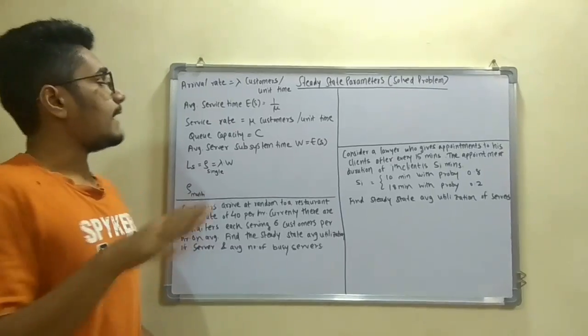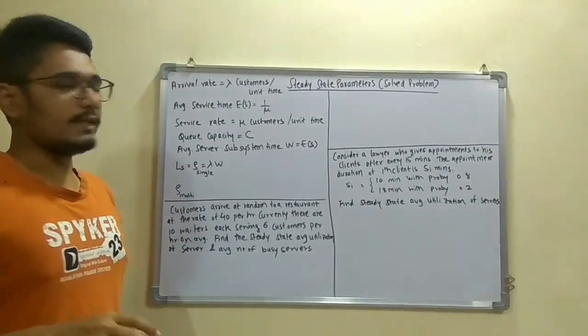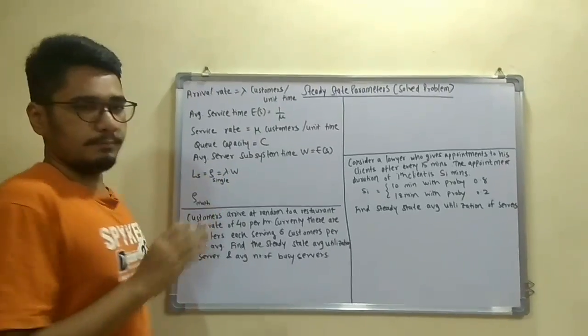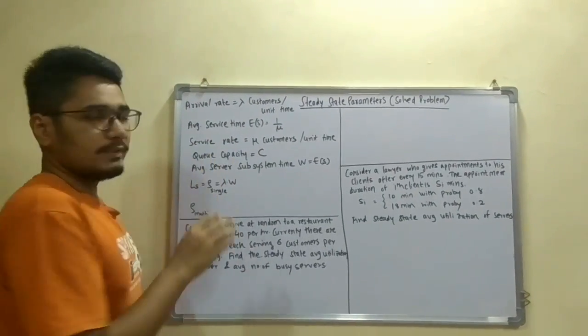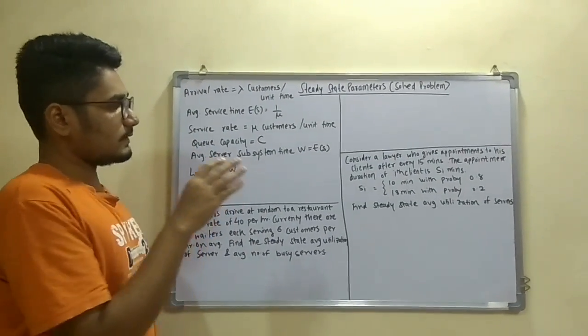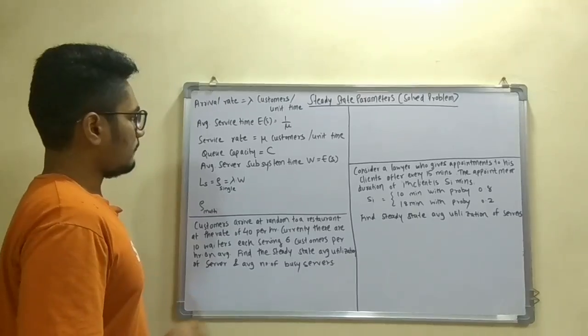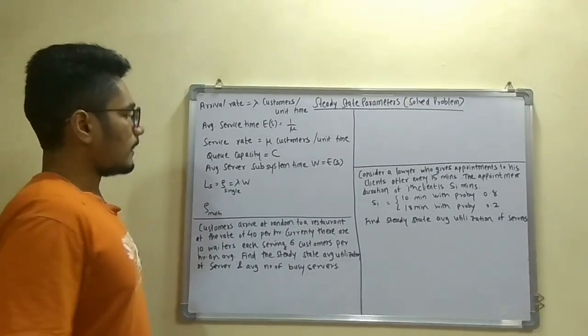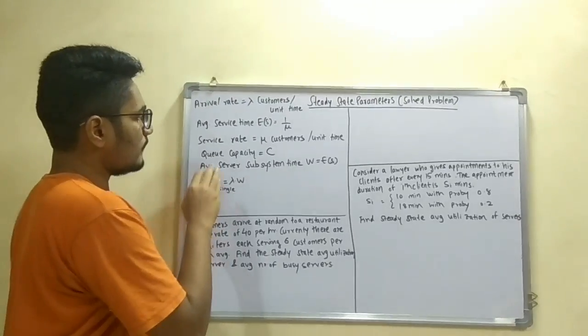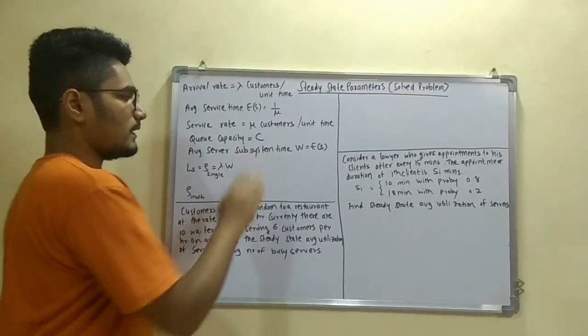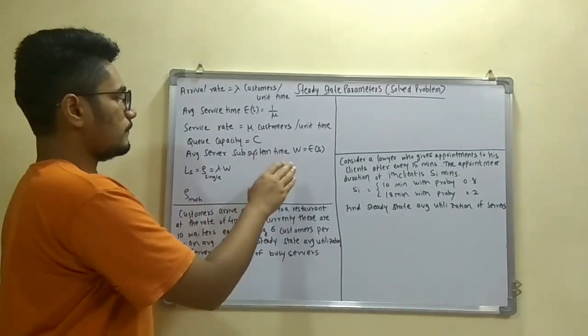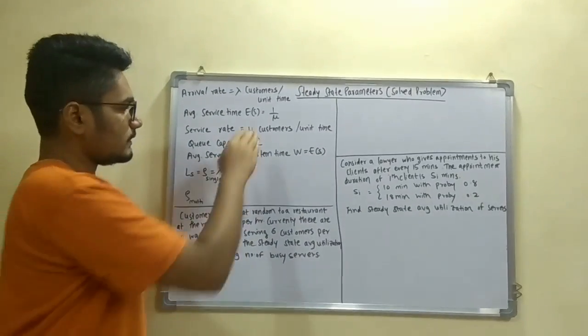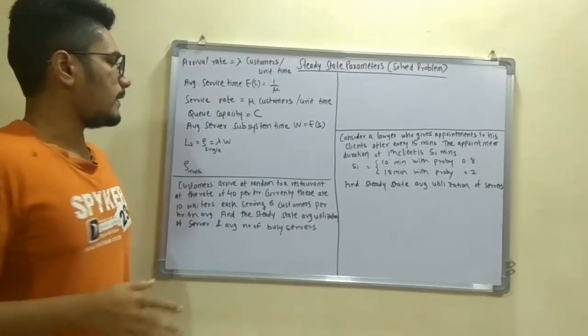Whenever in the problem we encounter arrival rate it is denoted by lambda and its unit are customers per unit time. Then comes the average service time, that is ES, which is 1 by mu, and mu is the service rate, that is mu customers per unit time. And C is the queue capacity and the average server subsystem time would be represented as w which would be equal to ES, which in turn would be equal to 1 by mu.